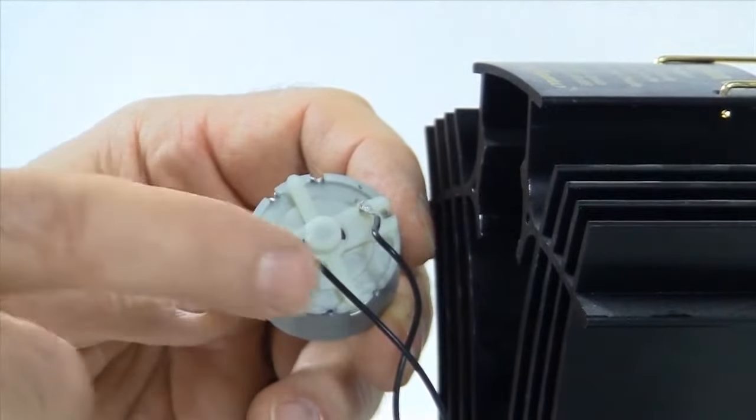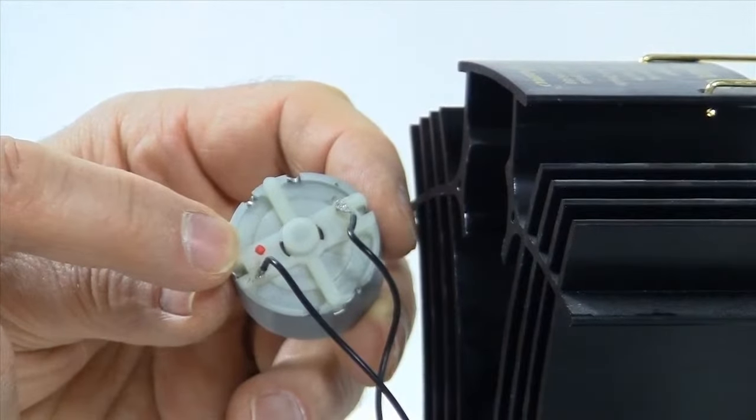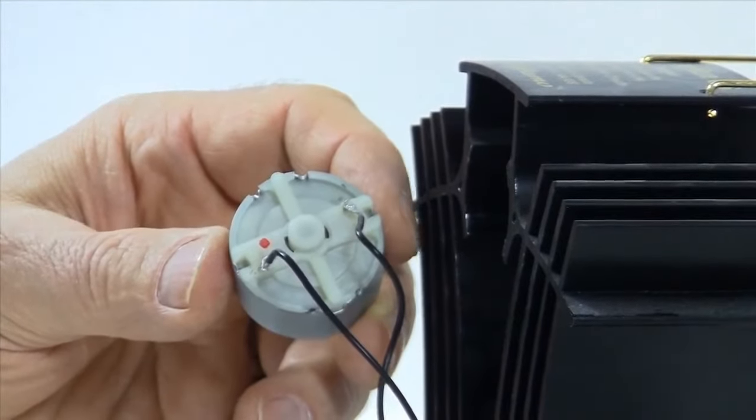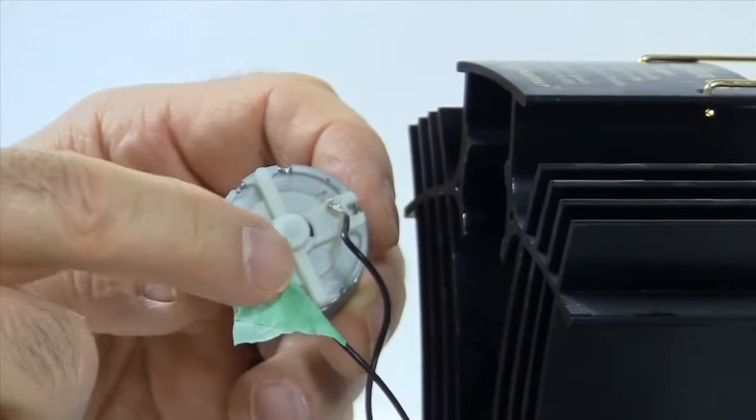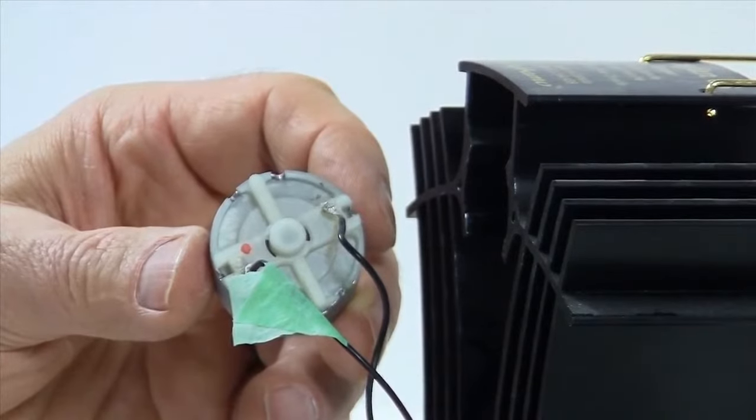Now to identify which wire goes to the terminal with the red dot, we'll use a piece of tape so that we know that this is the wire that leads to the positive side on the terminal for the new motor.